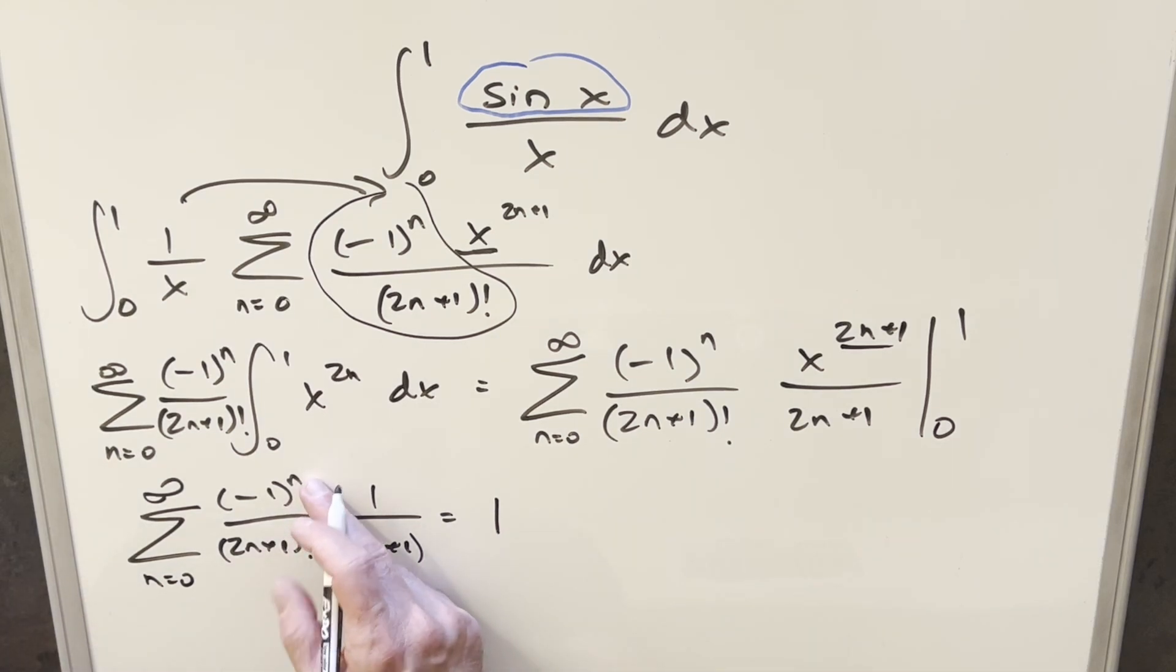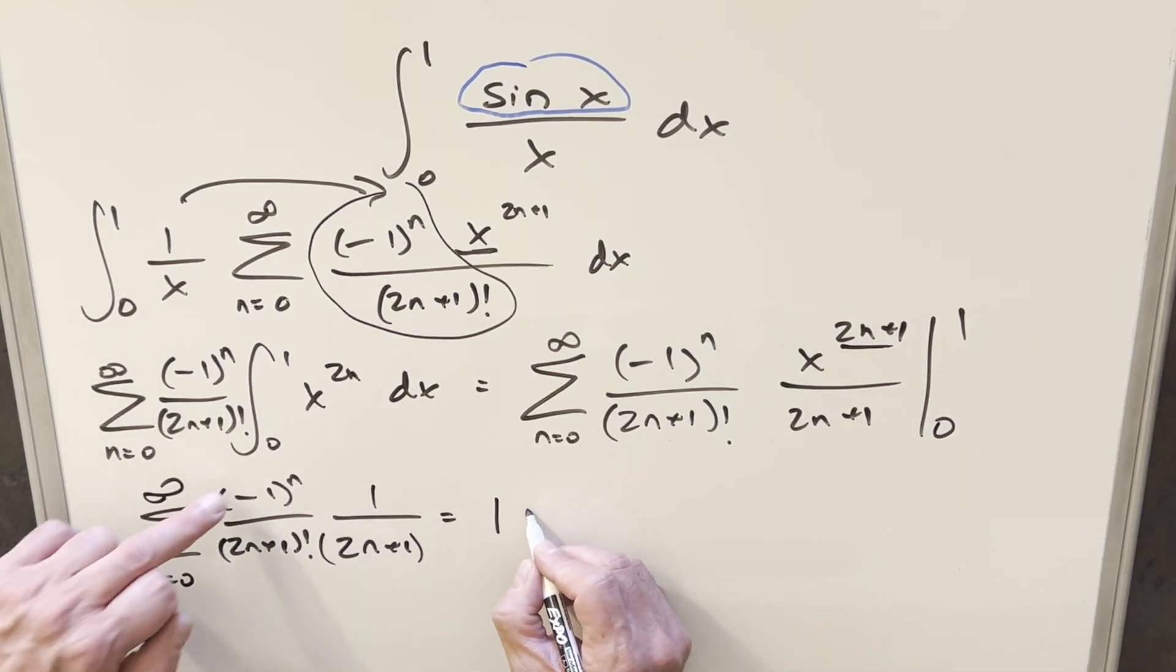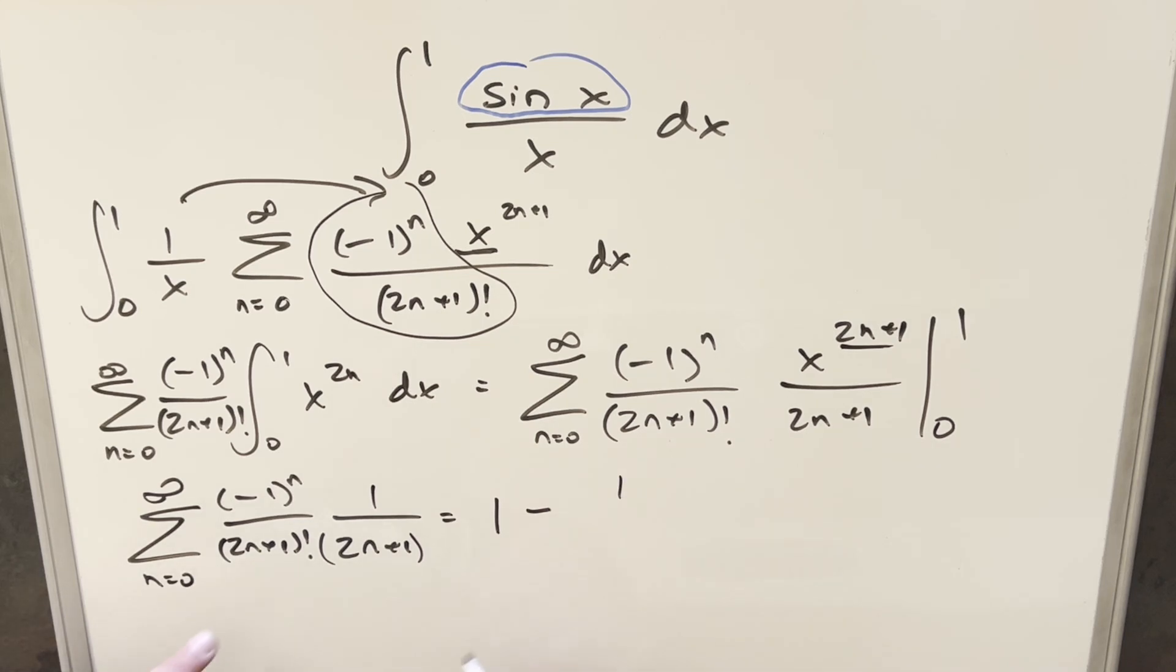Then for the second term, you plug in n equals 1. This brings a minus sign in front. Then this becomes 3 factorial times 3, which is 18. Then you plug in equals 2 and you have a positive sign. This becomes 5 factorial times 5, which is 120 times 5 or 600.